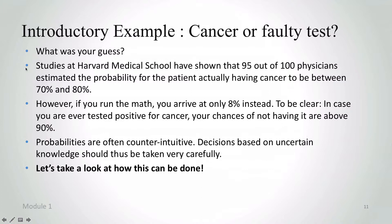However, if you do run the math properly, what you arrive at is only 8% instead. To make this point really clear: in case you are ever tested positive on cancer, your chances of not having it are above 90%.